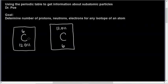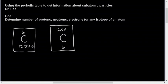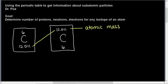The number that does have a decimal — it could be either at the top or the bottom, so you can't just memorize it's always at the top or always at the bottom. This number, with the decimal, is the atomic mass. That is the average mass of all the isotopes of this element.